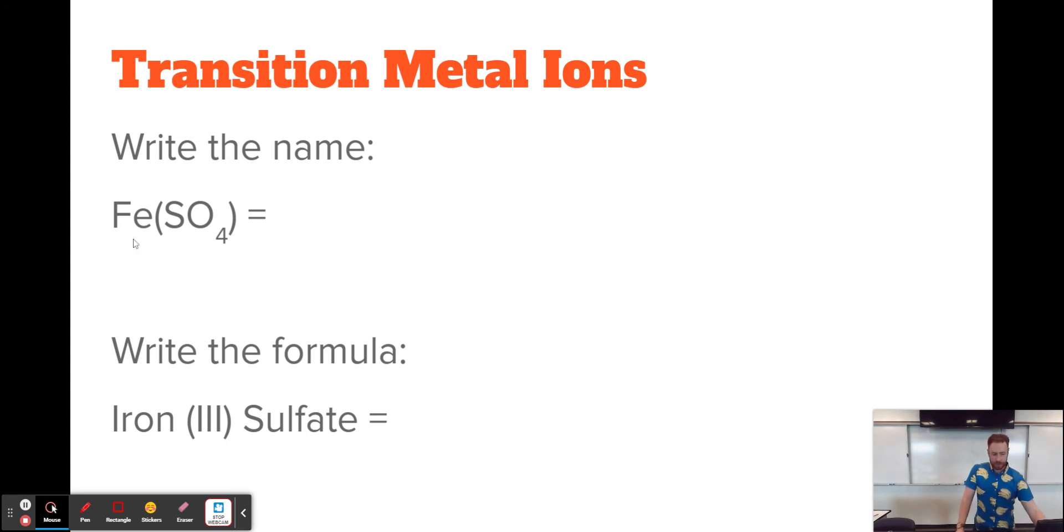So this first one is iron and a polyatomic ion. So what we're going to need is we're going to need one of these survival guides with a polyatomic ion list on it. It's on the second page. If you look up SO4, that's sulfate.